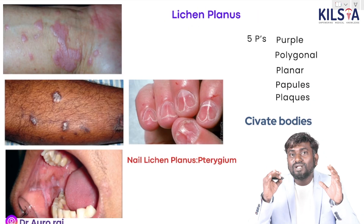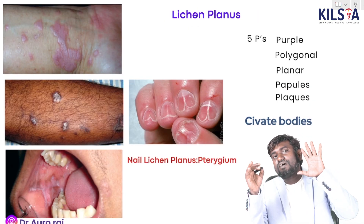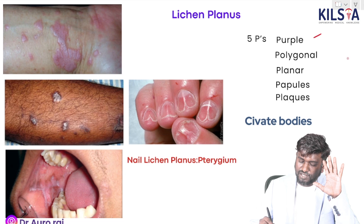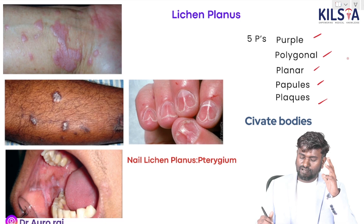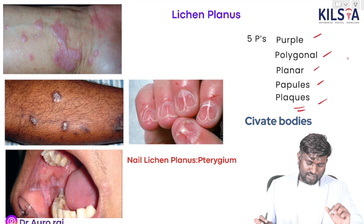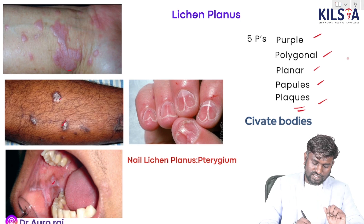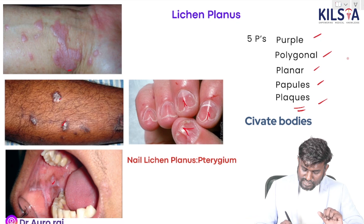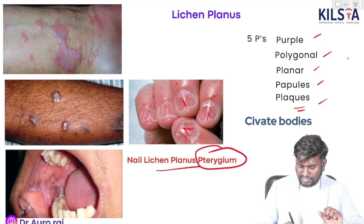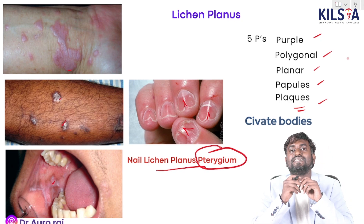Discussing lichen planus — remember the five P's: purple, polygonal, planar, papules, and plaques. These are the classic signs of lichen planus. In the nail, lichen planus shows a wing shape and can also be seen as pterygian nail. Lichen planus is classically associated with pterygian nail.